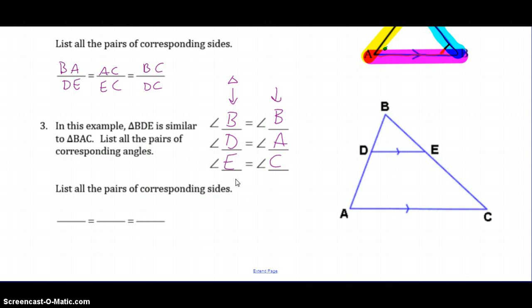List all the pairs of corresponding sides. So again, first two and first two, the BD over BA, last two, DE over AC, and then the first and last, BE over BC. And again, you'll notice that these are the three side lengths in one triangle, and these are the three side lengths in my other triangle.